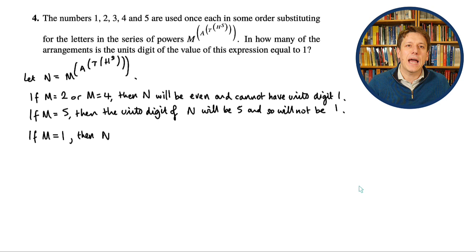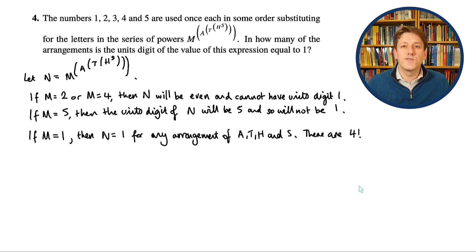Because I've got 1 to the power of anything, then n will always be 1. 1 to any power, however big, is just going to be 1 times 1 many, many times, and it'll be 1, so its units digit will be 1. So I can do any arrangement of a, t, h, and s, and so the number of ways of doing that is 4 factorial.